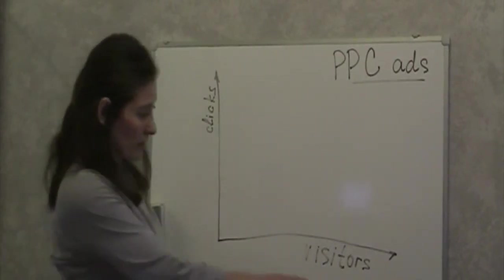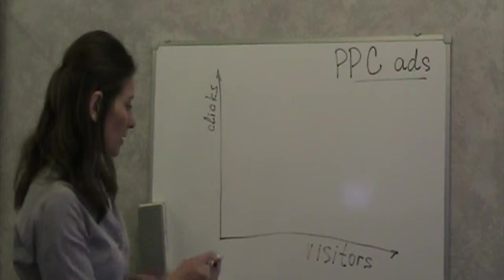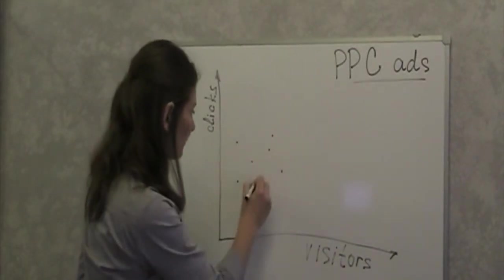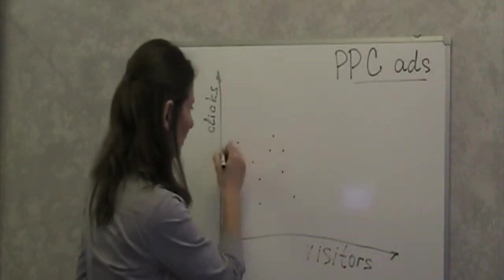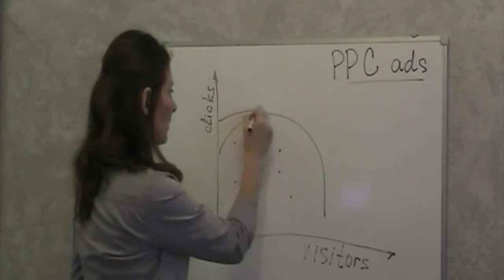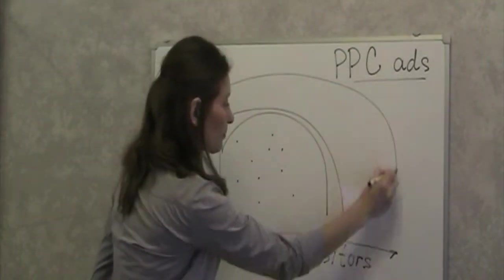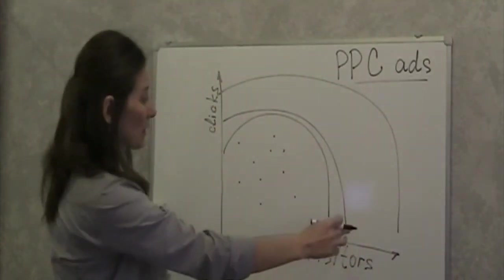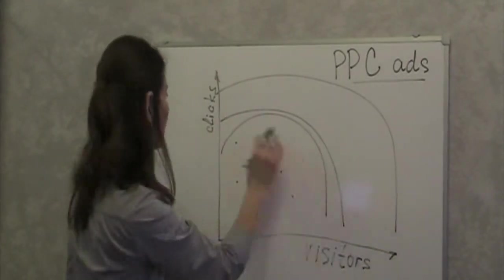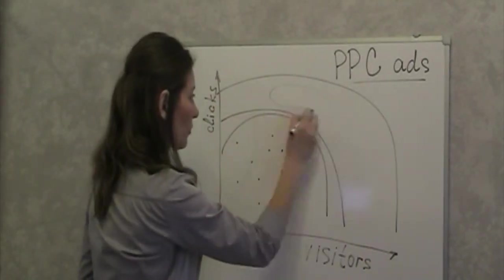How does it look? Here is visitors, here is clicks. The visitors click on your offer — this is organic search. And here is the paid per click advertisement campaign which covers your organic and has more visitors and more clicks. So here is paid.